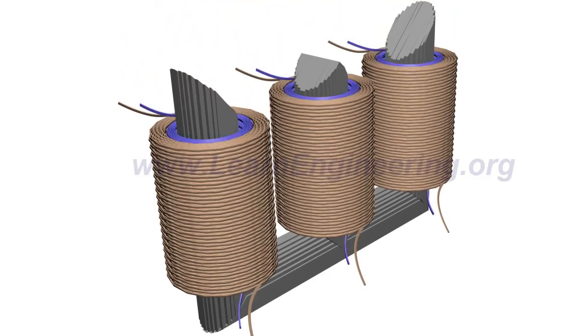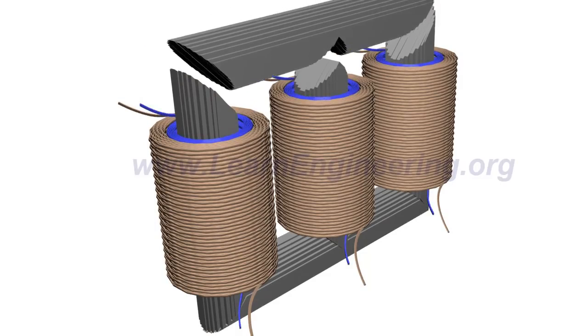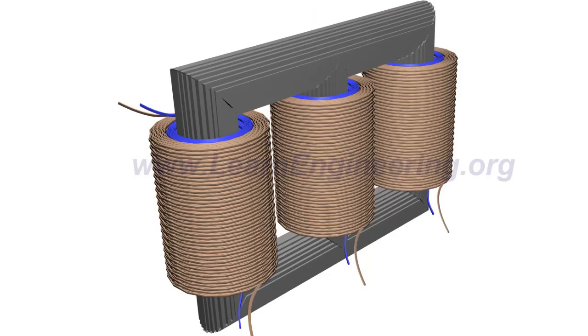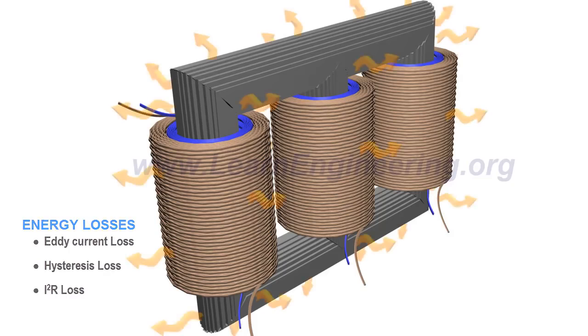The low-voltage windings usually sit near the core. Various kinds of energy loss happen while transferring power from the primary to secondary coil. All these energy losses are dissipated as heat.